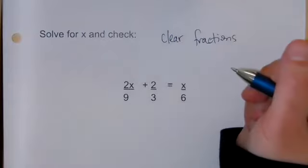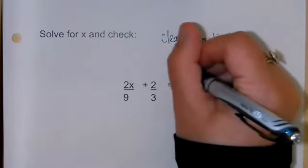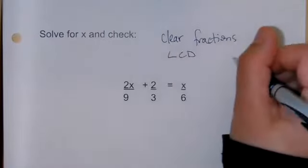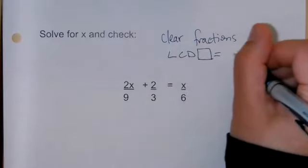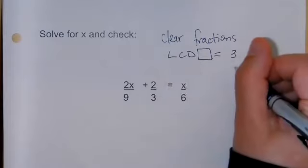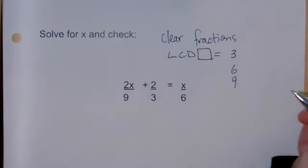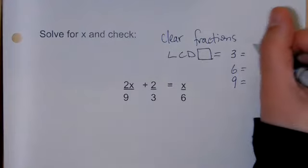In order to clear fractions, there's two ways to do it, but I think the easiest way is to get a lowest common denominator. So to find the LCD, we could take all the denominators: 9, 3, and 6.